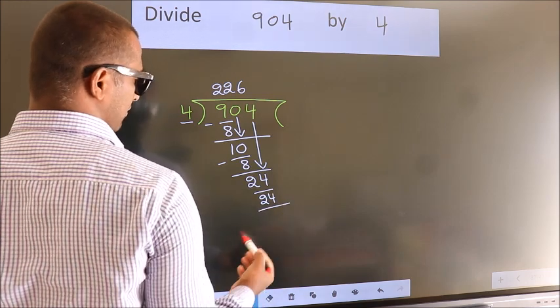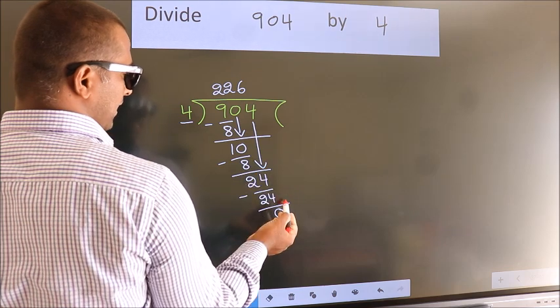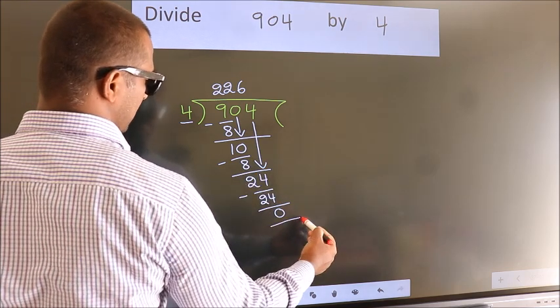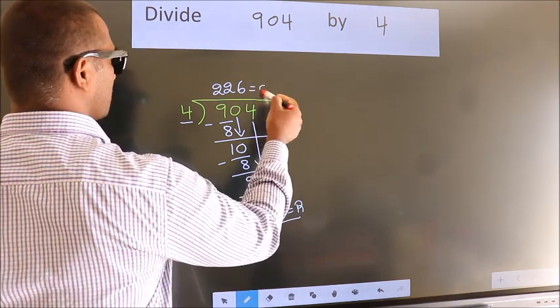Now we subtract. We get 0. No more numbers to bring down. So we stop here. This is our remainder. This is our quotient.